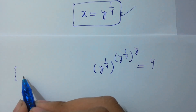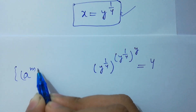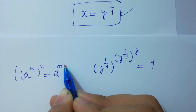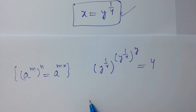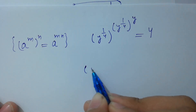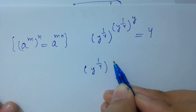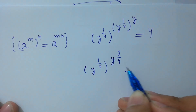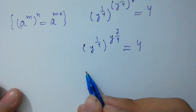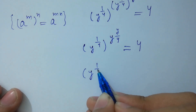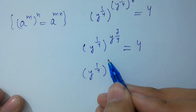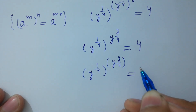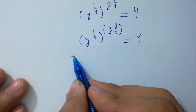Since a to the power m to the whole power n equals a to the power m times n, we can write y to the power 1 over 4, to the power y to the power y over 4, equal to 4. This simplifies to y to the power y over 4 equal to 4.